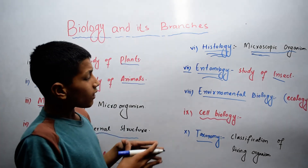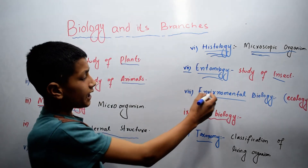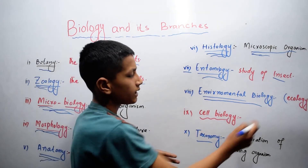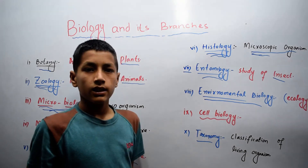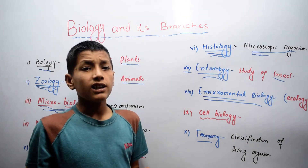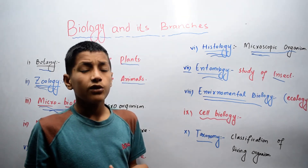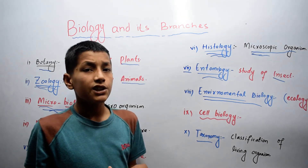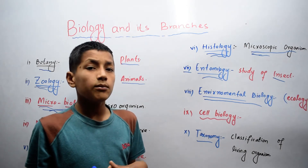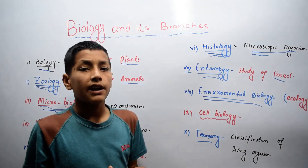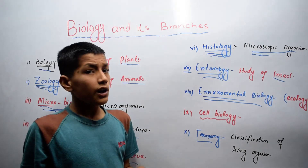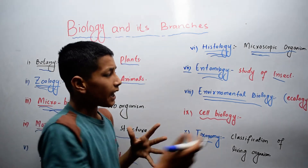The eighth branch of biology is environmental biology. Environmental biology is the branch of biology in which we deal with the study of organisms that affect our environment. So it is also called ecology.